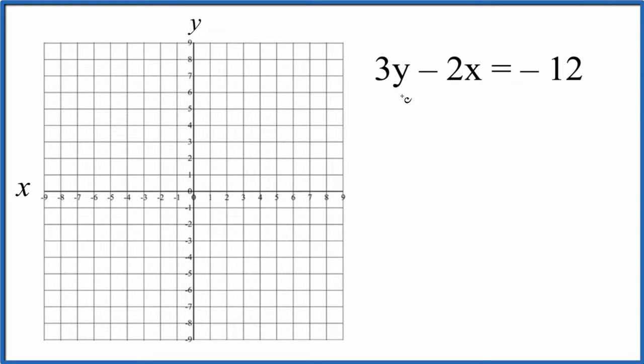All right, let's graph the linear equation 3y - 2x = -12. To do this, we're going to use slope-intercept formula. Here's our slope-intercept formula, and we need to get this equation into this format.